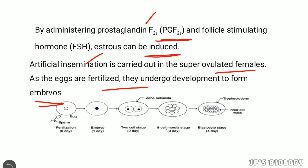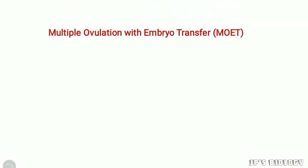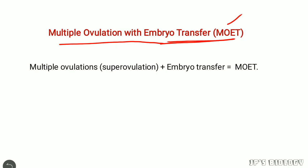After fertilization, embryos are formed. The embryo develops through the two-cell stage, eight-cell stage, morula stage, and then the blastocyst stage. Multiple ovulation and superovulation are induced, and then we can proceed to embryo production and embryo transfer.